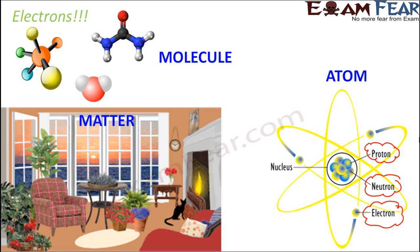The three subatomic particles are protons, neutrons, and electrons. Protons are positively charged, electrons are negatively charged, and neutrons are neutral — they carry no charge at all. Protons and neutrons are present at the center of the atom, and this center is called the nucleus, which is positively charged.